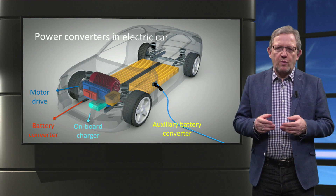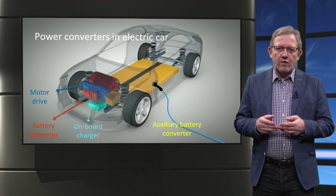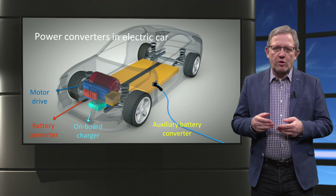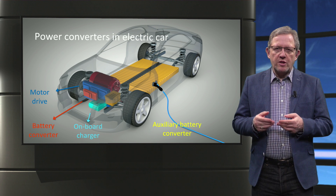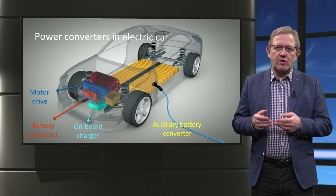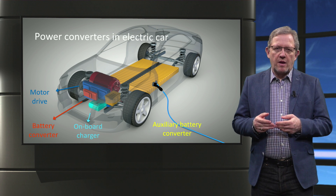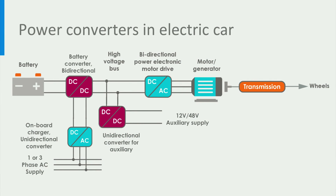With this knowledge we can look at the four main power converters in an electric car: namely the on-board charger, the traction battery converter, the auxiliary battery converter, and the motor drive. An electric car uses a central DC bus — called here the high voltage bus in the figure — for exchanging power between the various electric components, and the converters are responsible for controlling the power flows.